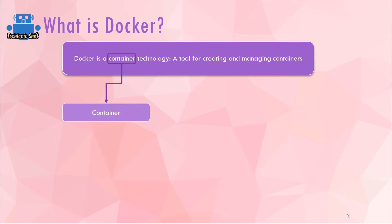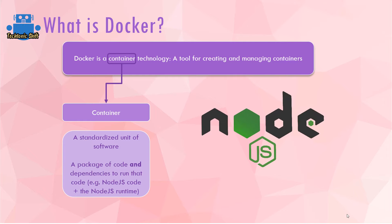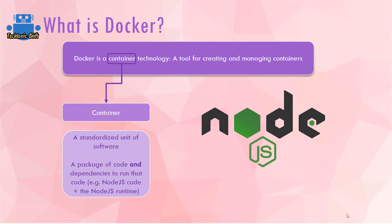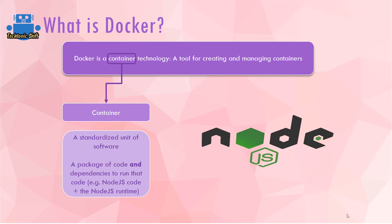A container in software development is a standardized unit of software, which basically means it's a package of code and, more importantly, the dependencies and tools required to run that code. For example, if you are building a Node.js application — Node.js is a JavaScript runtime which can be used to execute JavaScript code on a server.